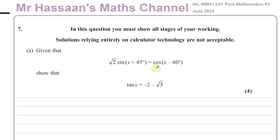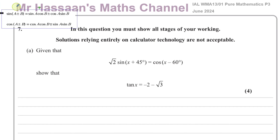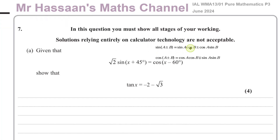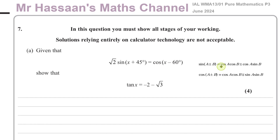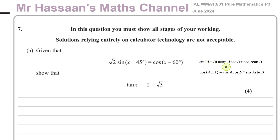So we're using the addition formulae. I have a formula sheet of this, which by the time you take the exam you should be able to do without even looking at the formula sheet. Here are the addition formulae for sine and cosine, A plus or minus B.